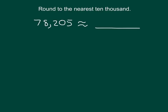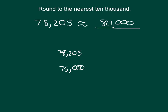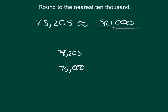So, what's halfway in between those two 10,000s? That's 75,000. We have the number 78,205 — is that less than the midway point or more than the midway point? It's more than that midway point of 75,000. So it's actually closer to 80,000. 78,205 rounded to the nearest 10,000 place is 80,000.